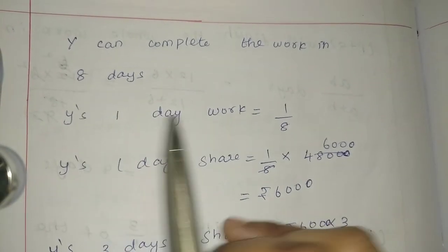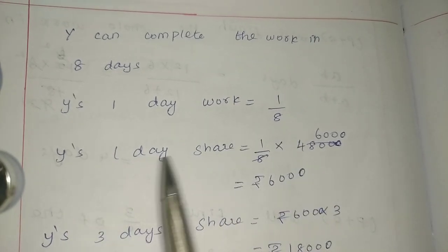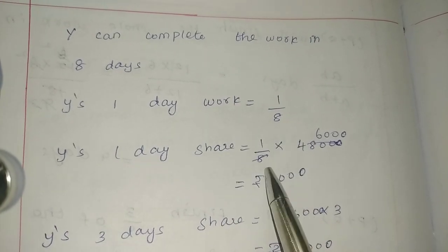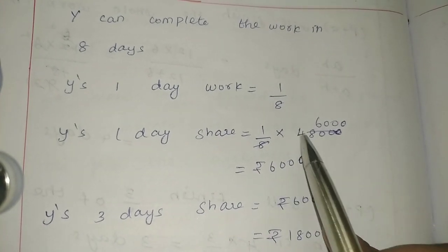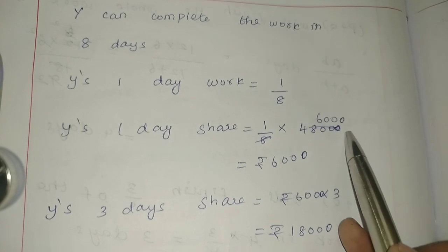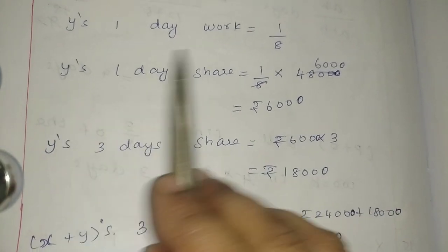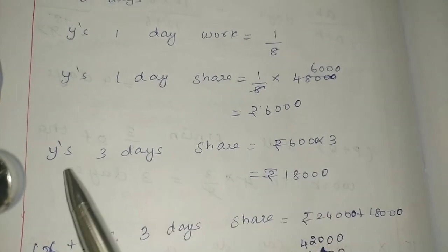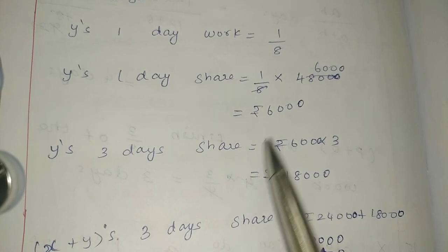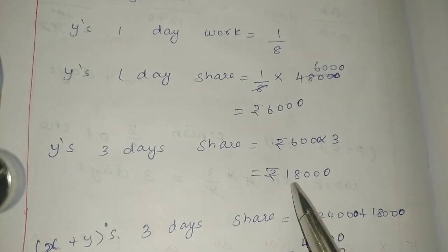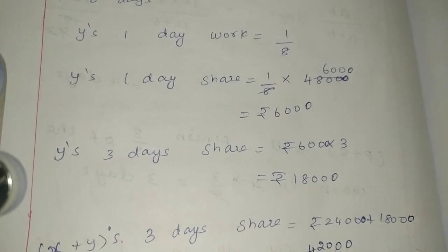Y can do the work in 8 days. So Y's 1 day work share is 1/8 into Rs.48,000, which equals Rs.6,000. So Y's 3 days share is 3 into 6,000, which is Rs.18,000.